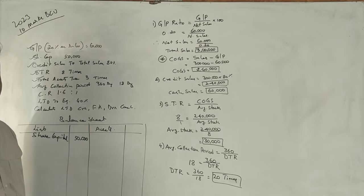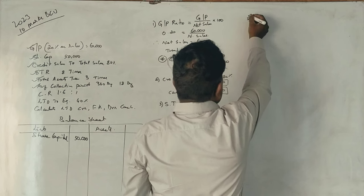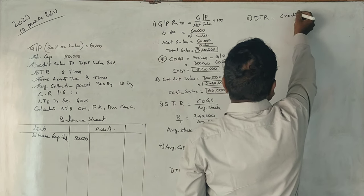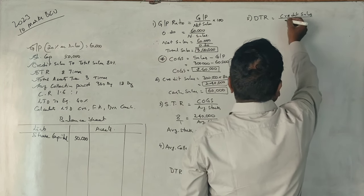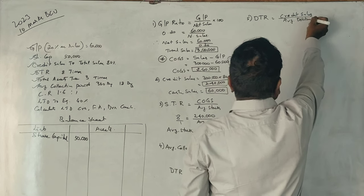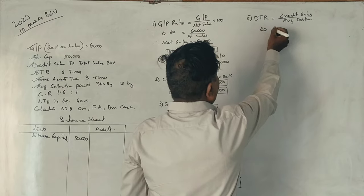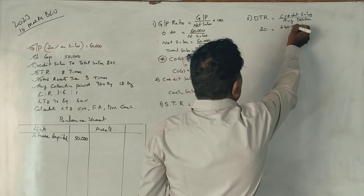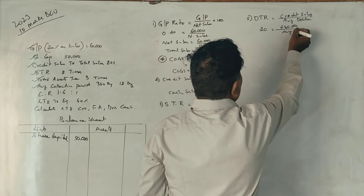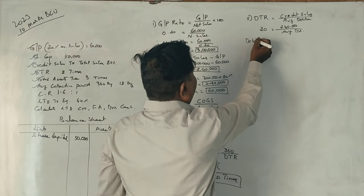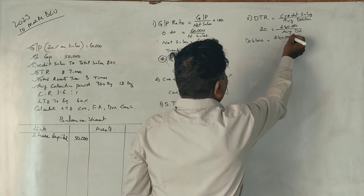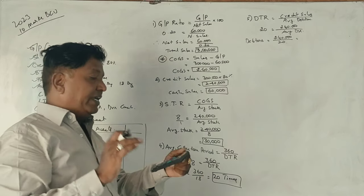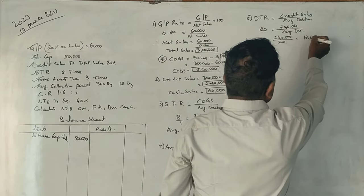Now, to calculate debtors: debtors turnover ratio equals credit sales divided by average debtors. Debtors turnover ratio is 20 times and credit sales are Rs. 2,40,000. Therefore, debtors equal Rs. 2,40,000 divided by 20, which gives debtors a value of Rs. 12,000.